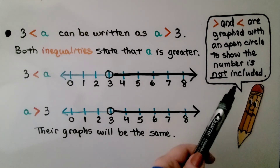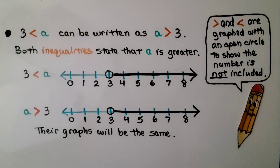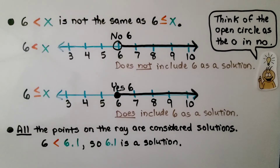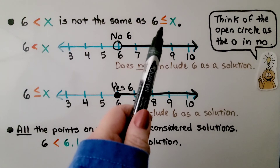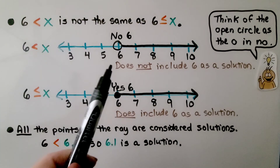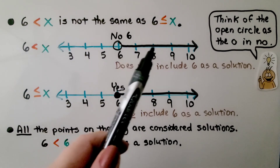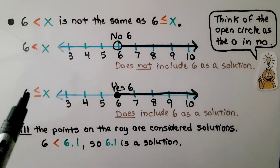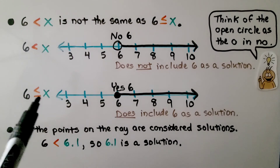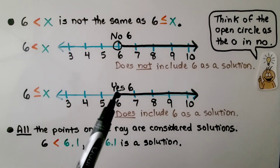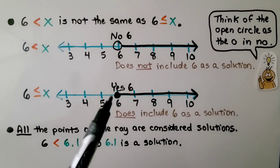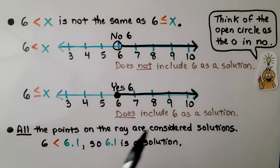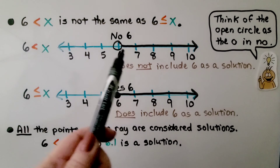The greater than and less than are graphed with an open circle to show the number is not included. This inequality states 6 is less than x — it's not the same as 6 is less than or equal to x. 6 is less than x means any number greater than 6 and does not include 6. 6 is less than or equal to x does include 6 as a solution. You can see the open circle for no and the filled-in circle for yes — we can think of the open circle as the 'o' in no.